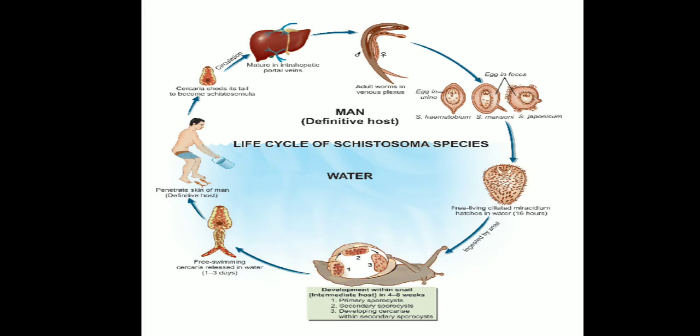Coming to the life cycle of Schistosoma haematobium, this parasite passes its life cycle in two hosts. The definitive host is the human — no animal reservoir — and the intermediate host is freshwater snails. You can see this in the diagram. The infective form of this parasite is the cercaria larva.